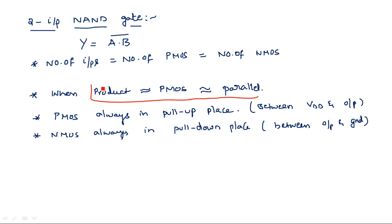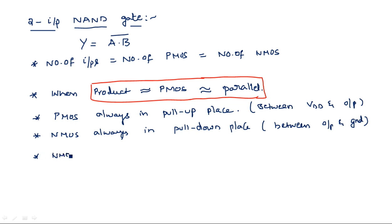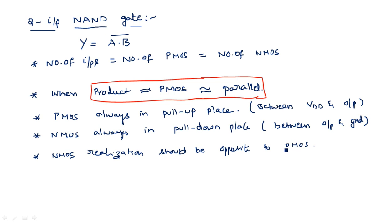For a sum (addition) realization — like A plus B — pMOS transistors should be connected in series. The nMOS realization is always opposite to the pMOS: if pMOS is in parallel, nMOS is in series; if pMOS is in series, nMOS is in parallel. This is the logic behind CMOS circuit realization.